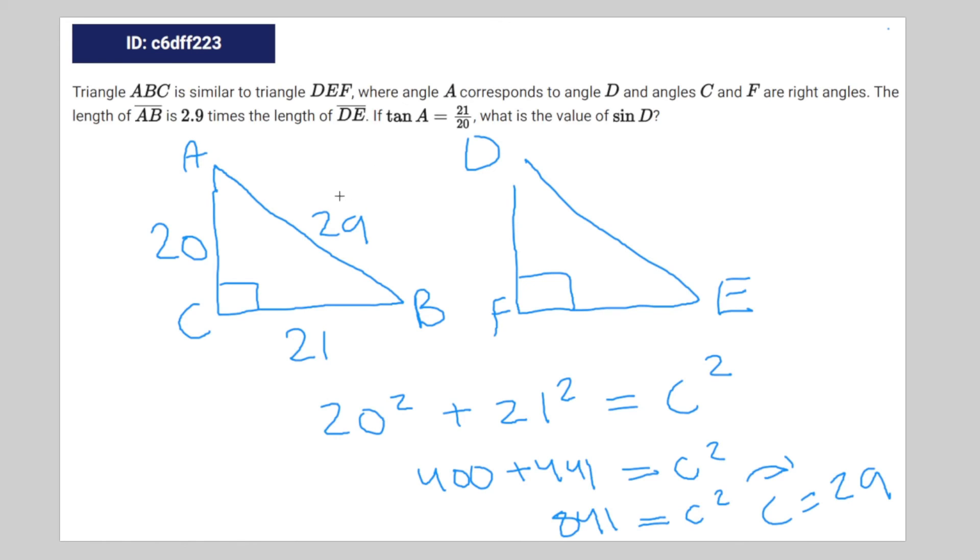And this relationship would cross over to the DEF triangle. So you could say that the sine of D is equal to the opposite, which is 21, over the hypotenuse, which is 29. And that is your answer.